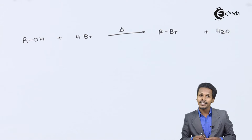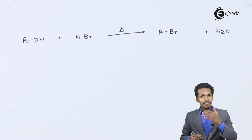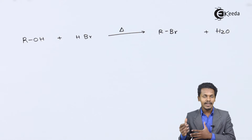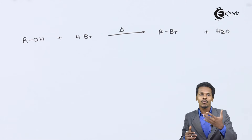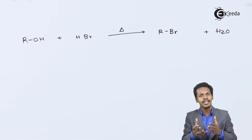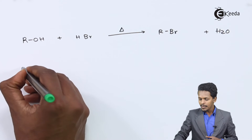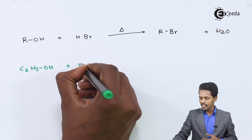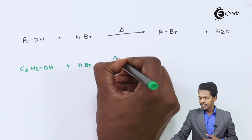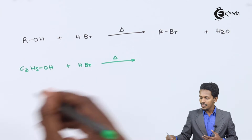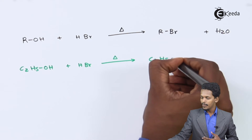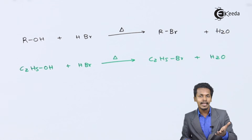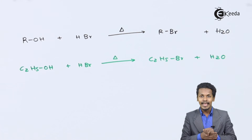For primary, secondary, or tertiary alcohols, all reactions are feasible when reacting with hydrogen bromide. The temperature required depends on whether we are taking a primary, secondary, or tertiary alcohol. For example, if we consider C2H5OH reacting with HBr, by providing a certain temperature we get C2H5Br along with water as a byproduct.